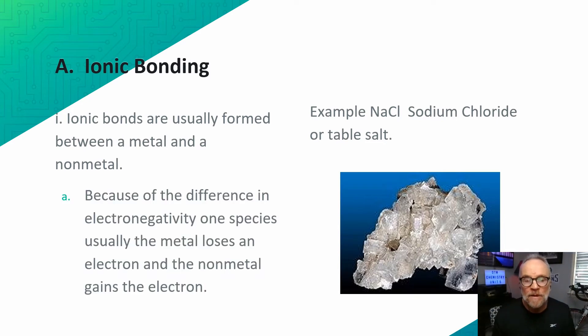This happens because of the differences in electronegativity between the two species. Our example here is sodium chloride or table salt. We have a salt crystal here in our picture. Some of these ionic bonds form very beautiful crystalline structures, and they have a repeating pattern of ions occurring.